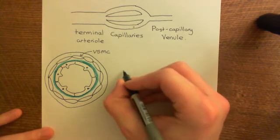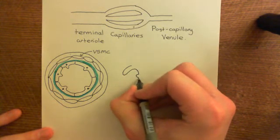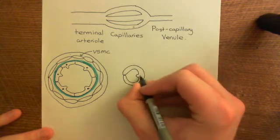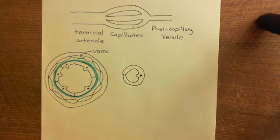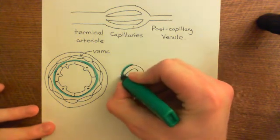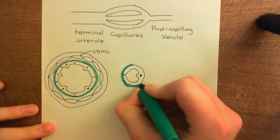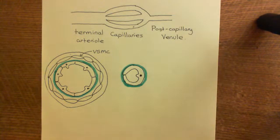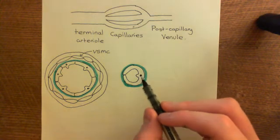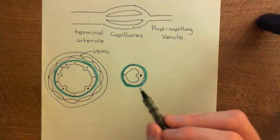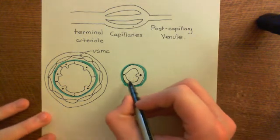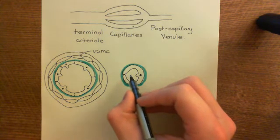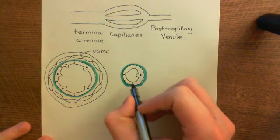Let's now draw a cross-section of a capillary. Capillaries are incredibly easy to draw — they're tiny little blood vessels whose entire circumference consists of a single endothelial cell sitting on a basement membrane, and that is all it is. That's the complete structure of a capillary — nothing else after that. The lumen of this capillary is ridiculously narrow; it's barely thick enough for a single red blood cell to fit through.